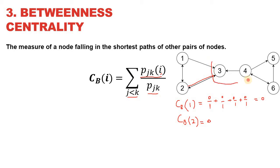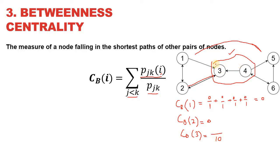These two nodes have a very important position because they are linking two pairs of nodes, so they are going to have considerably high betweenness centrality compared to the other four nodes. Let's calculate the betweenness centrality for node 3. We have a total of 10 paths, and node 3 happens to be in the shortest path between 2 and 4, between 1 and 4, between 2 and 5, between 1 and 5, between 2 and 6, and between 1 and 6 — a total of 6 shortest paths. So out of 10 total paths, node 3 is in 6, giving it a betweenness centrality value of 0.6.